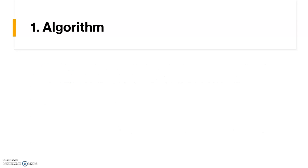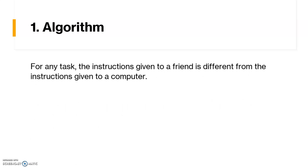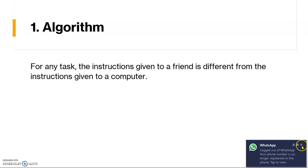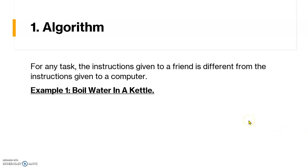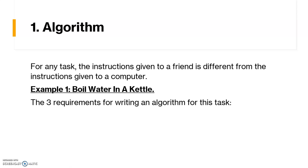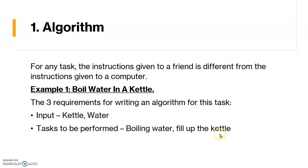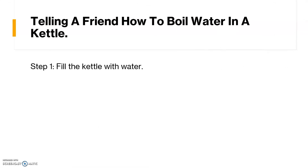Let us see some examples of writing an algorithm. Whenever any task is given, the instructions you give to your friend and the instructions you give to a computer are different. For example, consider the task of boiling water in a kettle. The input specifications are a kettle and water; the task is to fill the kettle and boil the water; and the expected output is boiled water. The instructions to a friend are very simple — fill the kettle, place it on the stove, turn on the burner, and once the water starts boiling, turn off the burner.